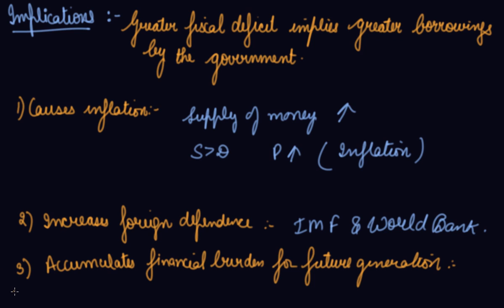Fourth, it multiplies borrowings, which is, payment of interest increases revenue expenditure of the government, causing an increase in its revenue deficit. Thus, a vicious circle sets in wherein deficits multiply borrowings.